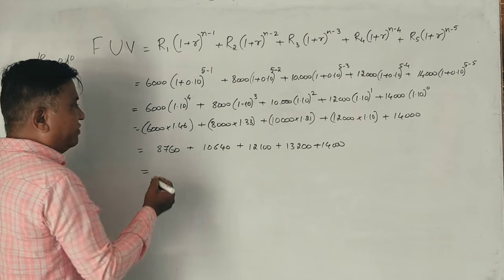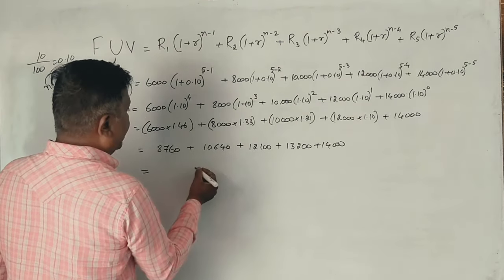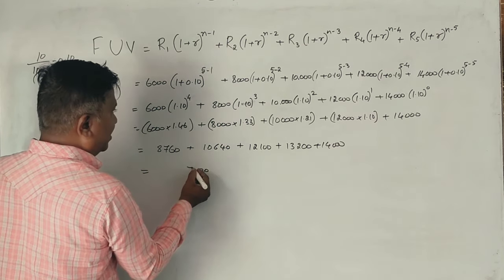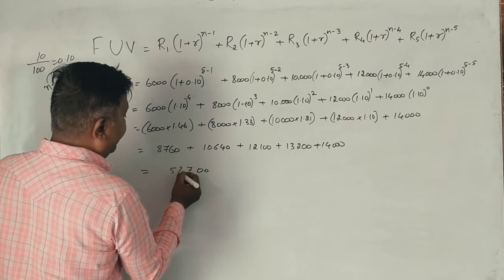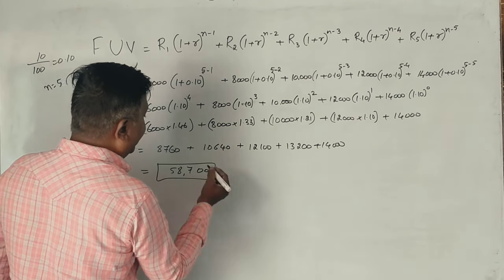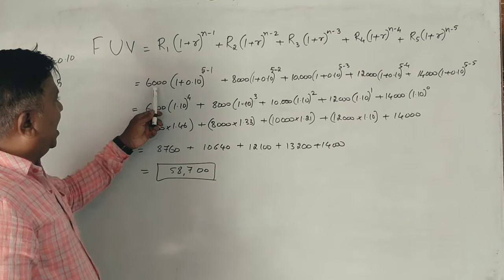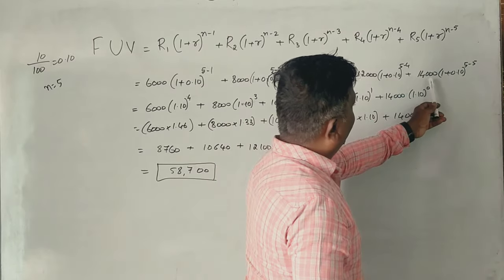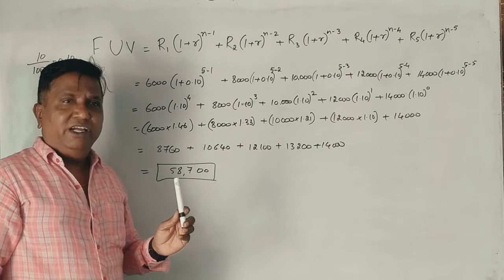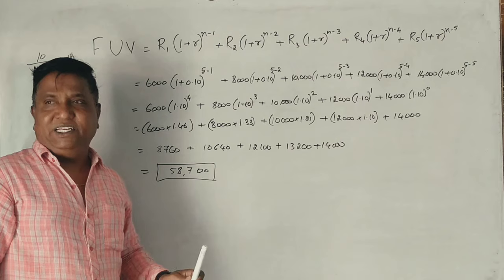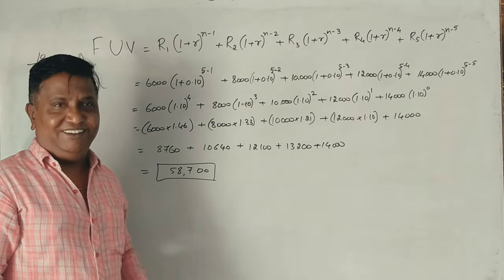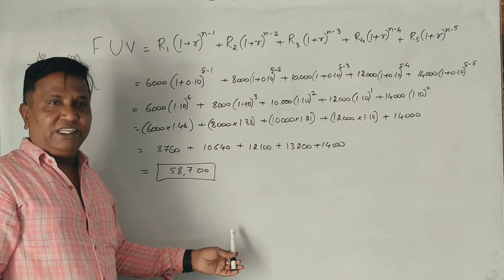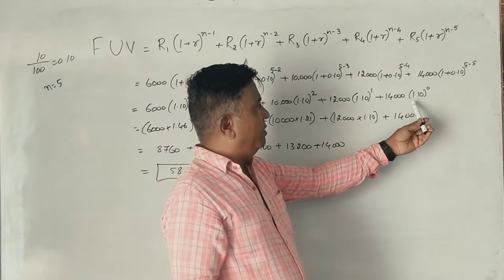Now check the totals of all 5 numbers: 8,760 plus the others gives a total of 58,700. So at the end of the 5th year, the future value is Rs. 58,700.